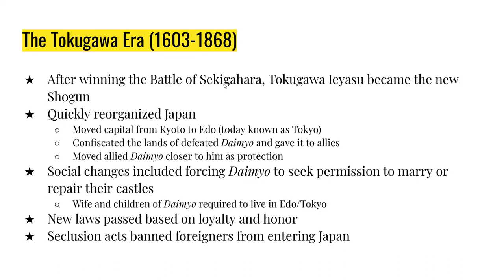After winning the battle, Tokugawa Ieyasu becomes the new Shogun, beginning the Tokugawa Era lasting from 1603 to 1868. He reorganizes Japan, moving the capital from Osaka to Edo — known today as Tokyo. He confiscates lands from defeated enemies, redistributes them, and repositions the daimyo so his closest allies are nearest to his land, essentially using them as protection. Tokugawa Ieyasu also continues the sword hunt, further limiting who could be a samurai.